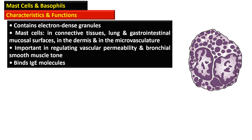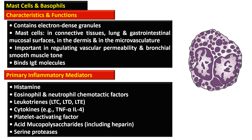When mast cells degranulate, there is release of histamine, eosinophil and neutrophil chemotactic factors, leukotriene D, E, and C, cytokines such as tumor necrosis factor alpha and interleukin-4, platelet activating factor, acid mucopolysaccharides such as heparin, and serine proteases. Histamine binds with specific H1 receptors in the vascular wall and induces epithelial cell contraction, leading to gap formation and edema. This action can be pharmacologically blocked by H1 receptor antagonists.